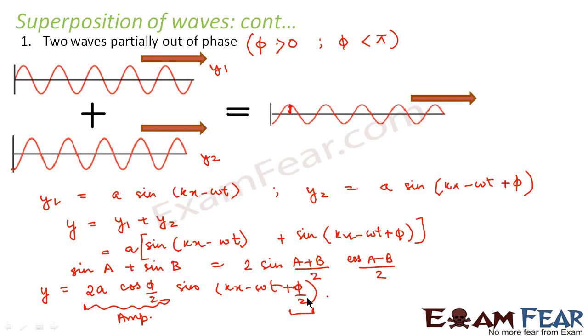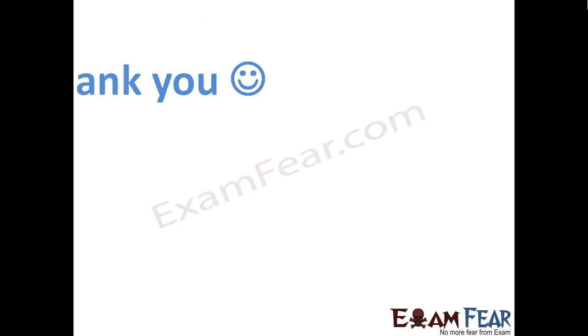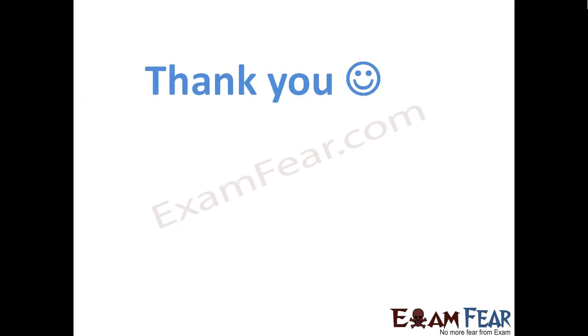I hope it is now clear how we superpose waves and how different kinds of waves superpose to form a resultant wave. Reflection of waves is an excellent example of superposition, so let us talk about reflection of waves next.